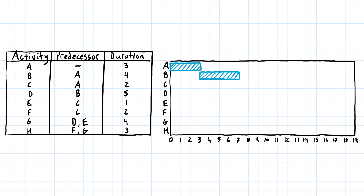Moving on to activity C — it also depends on activity A, so it can't start until activity A finishes, and it has a duration of two days. We come to where activity A finishes and follow that down to activity C. We go over one and two. Next is activity D: it can't start until activity B is finished, and it's five days long. Activity B finishes at the end of the seventh day, so activity D starts there — technically the beginning of the eighth day — and we come over one, two, three, four, five days.